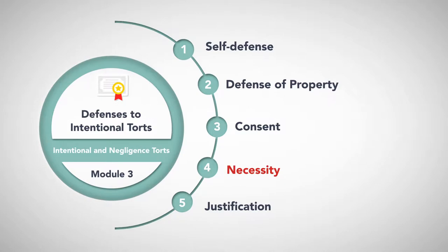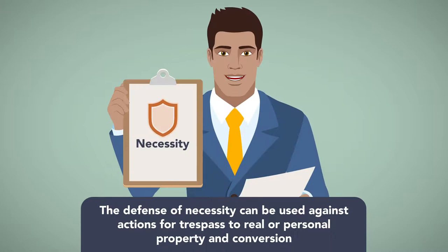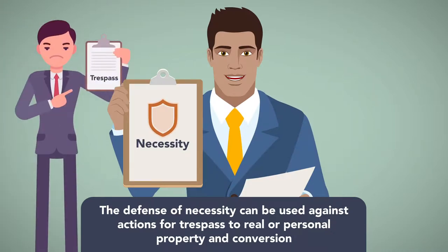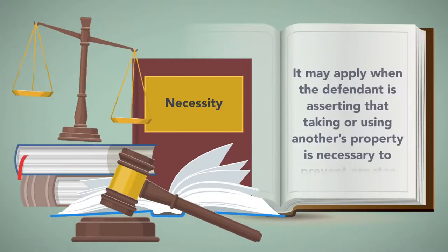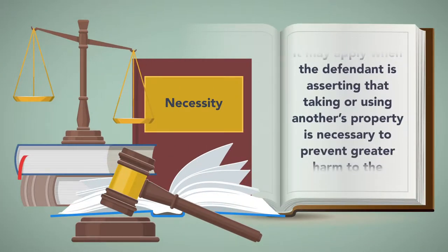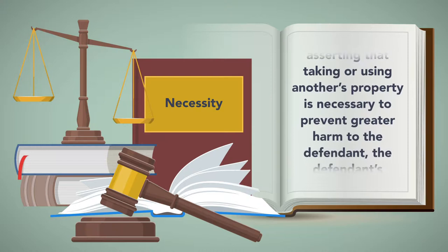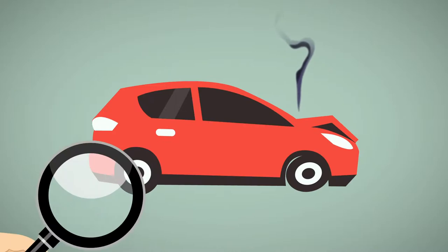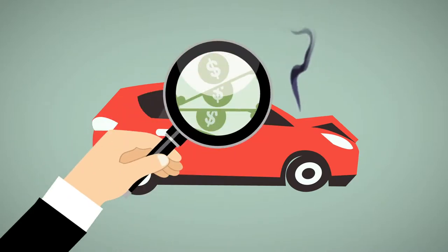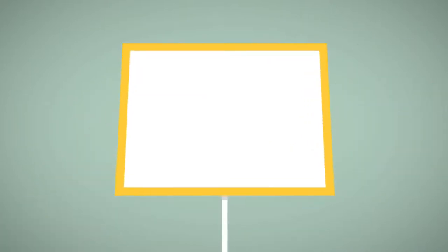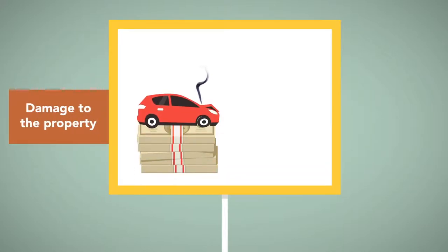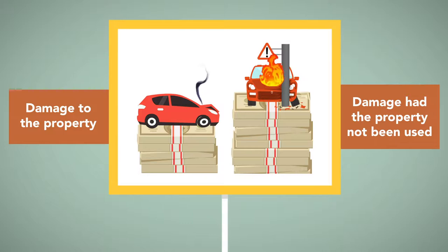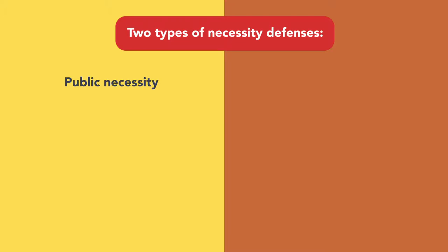The defense of necessity can be used against actions for trespass to real or personal property and conversion. It may apply when the defendant asserts that taking or using another's property is necessary to prevent greater harm to the defendant, the defendant's property, or others. These cases are generally initiated when the plaintiff seeks compensation for damages to property. To succeed, the defendant must show that the damage to the property was less than the value of the damage that would have resulted had the plaintiff's property not been used. There are two types of necessity defenses: public and private.